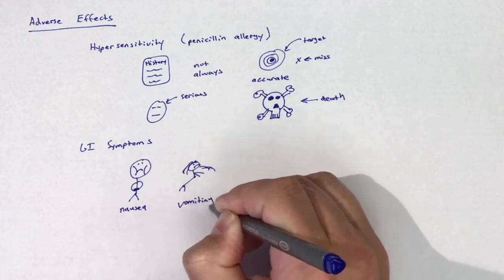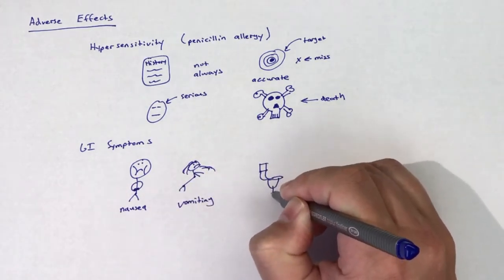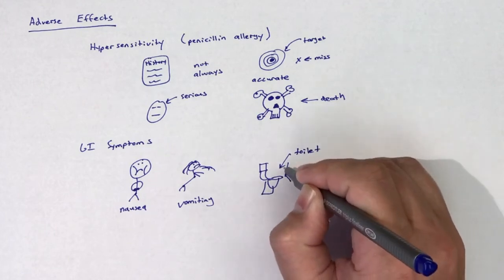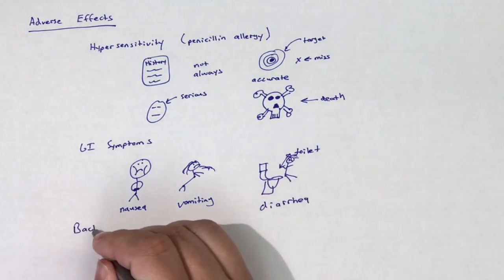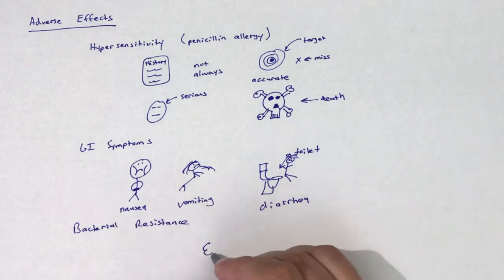Other adverse effects include GI symptoms of nausea, vomiting, and diarrhea if a large dose is consumed. There are not many prevalent adverse effects associated with penicillin G use.